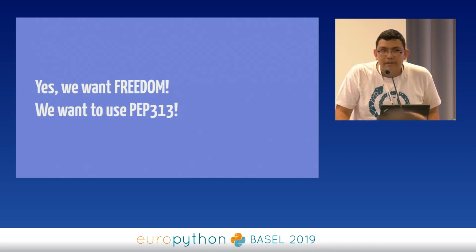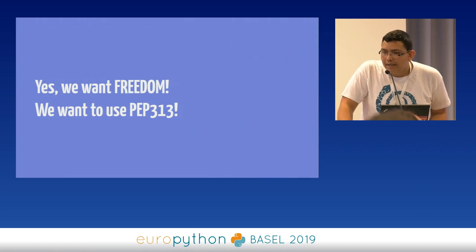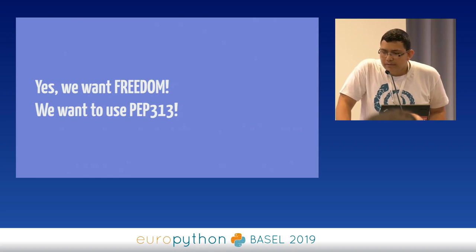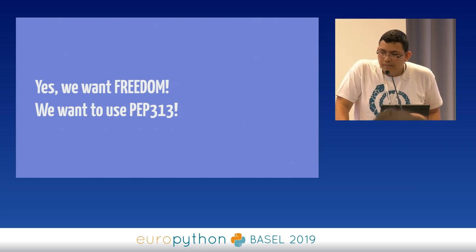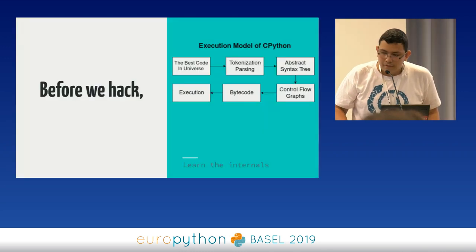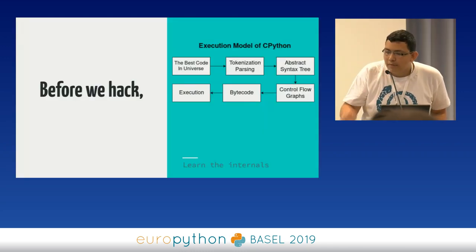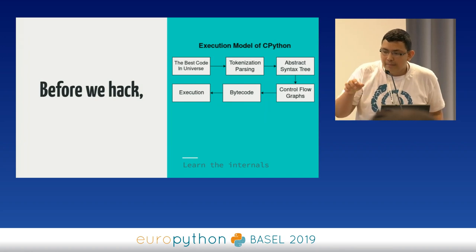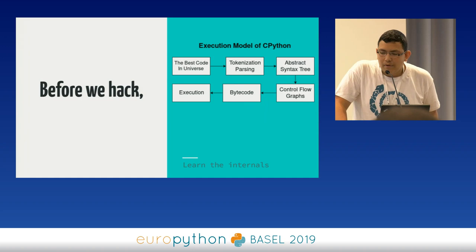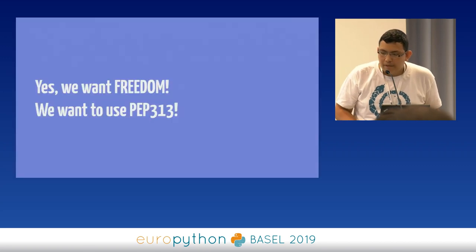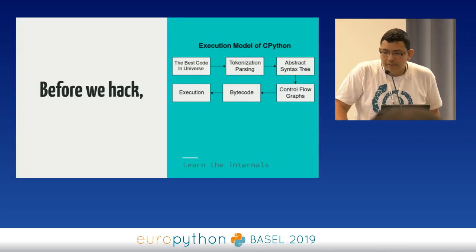Anyone heard of PEP 313? It's an old PEP about adding Roman literals as Python integers. It was rejected with some good reasons in 2005. But what if you want to use PEP 313? Isn't it your freedom? It is why we are going to hack. For doing such hacks, we need to learn how CPython works. Every step in the execution model is a breakpoint where we can inject our code or alter the output. For example, if you want to implement PEP 313, you need to replace all capital Roman numerals with their integer values in the AST compiling step.